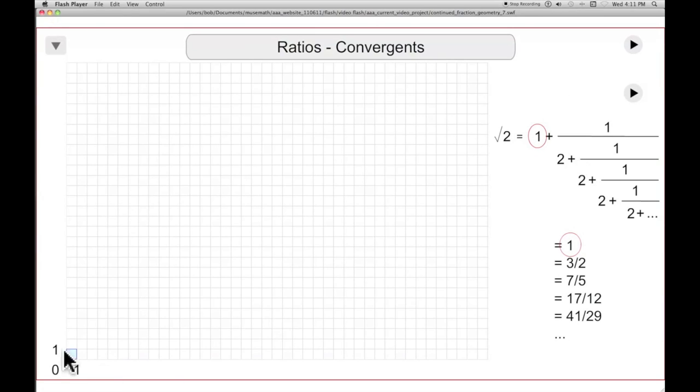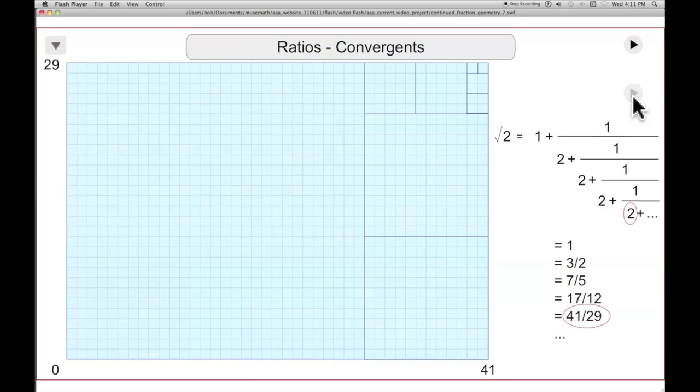Now here, the sides of the rectangles are all going to be multiples of that unit value. You can sort of see 3 by 2, 7 by 5, 17 by 12. There we go.